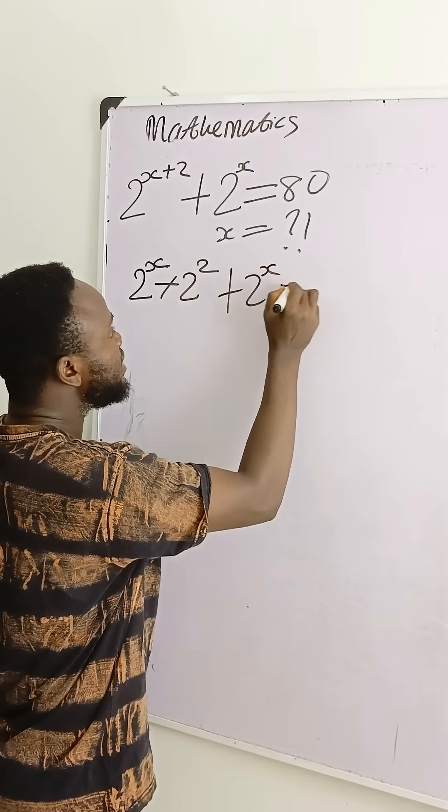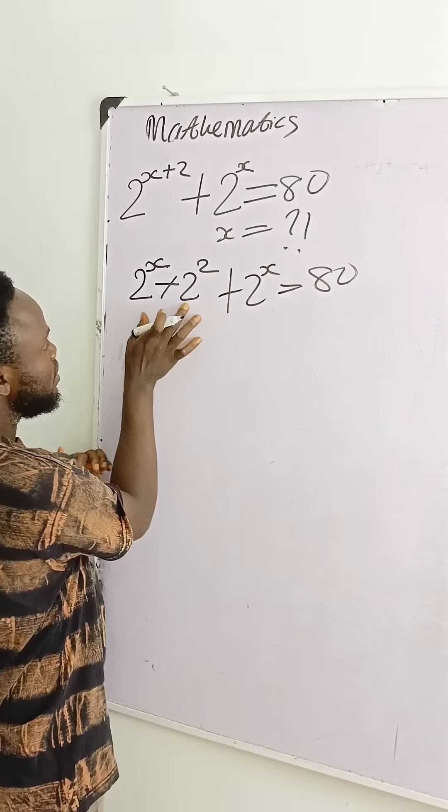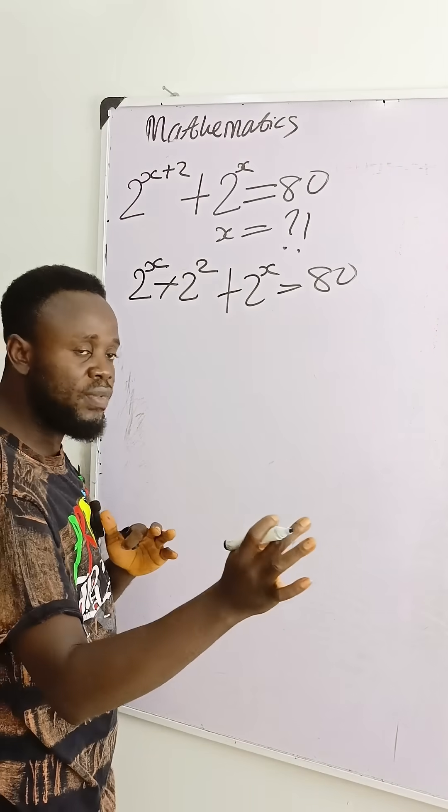Plus 2 raised to power x is equal to what? 80. 2 power x here, 2 power x here. That's the common factor.